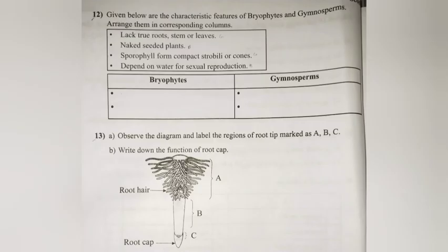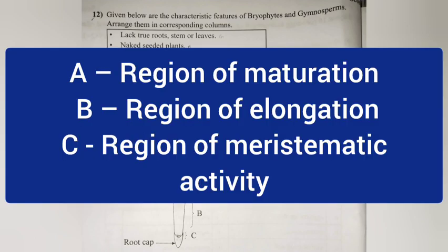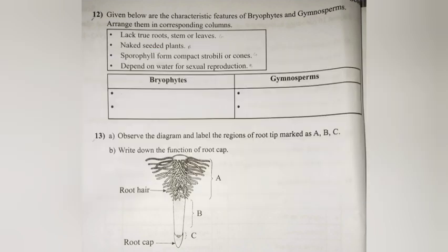Question 13 (A): Observe the diagram and label the regions of the root tip marked as A, B, and C. Answer: A — Region of maturation. B — Region of elongation. C — Region of meristematic activities.